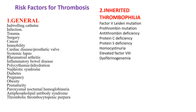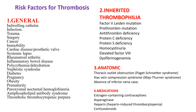From inherited thrombophilia, Factor V Leiden mutation, prothrombin mutation, antithrombin deficiency, protein C and S deficiency, homocystinuria, elevated factor VIII, and dysfibrinogenemia can be mentioned.